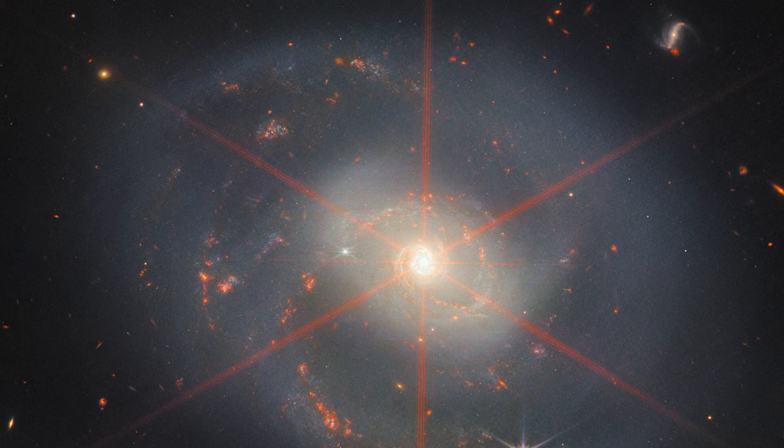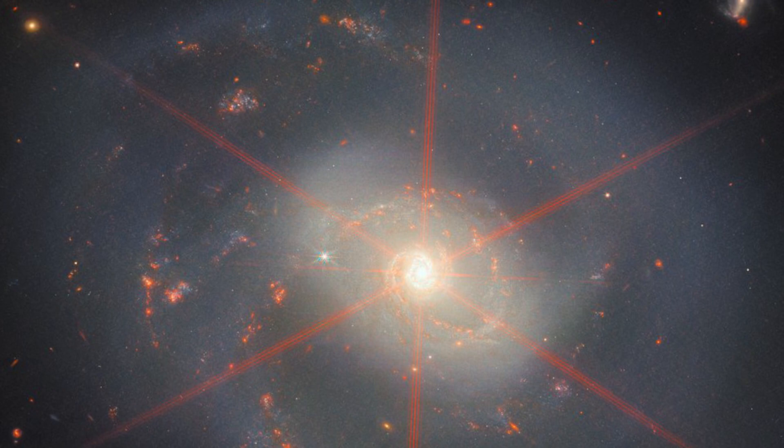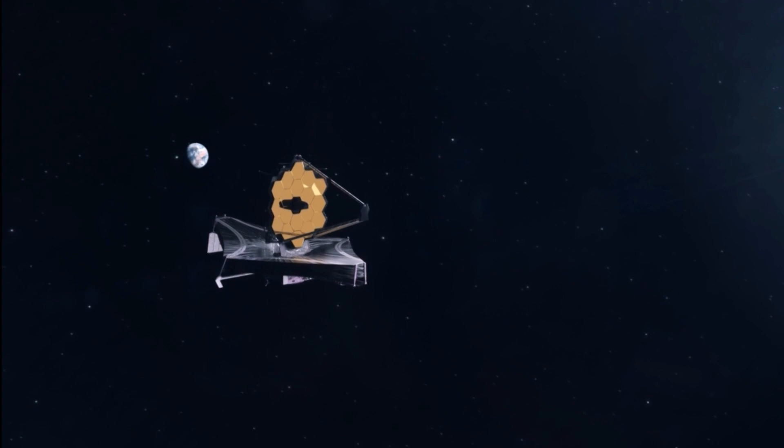The image's focal point, NGC 7469, is a stunning six-pointed star. The diffraction spike is an image artifact created by the bright, unresolved AGN and, unlike the galaxy, is not a true celestial object.